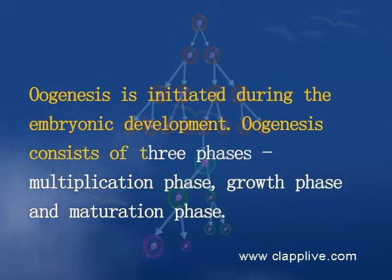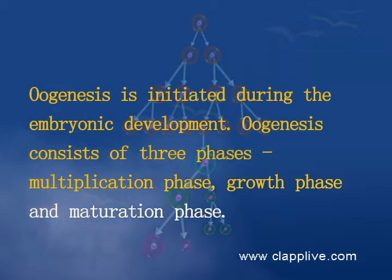Oogenesis consists of three phases: multiplication phase, growth phase, and maturation phase.